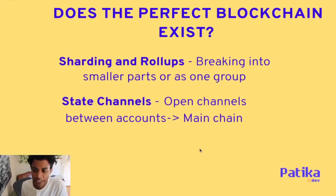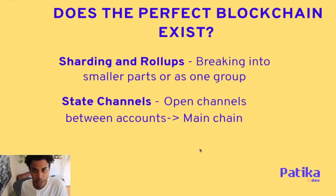Another solution is state channels. If you're interacting with one account frequently, you can open a channel between those accounts and transact back and forth. After the interaction period ends, you settle and submit the final settlement to the main chain, so all those small transactions are treated as one transaction on the ledger.